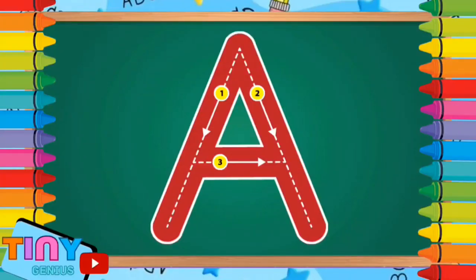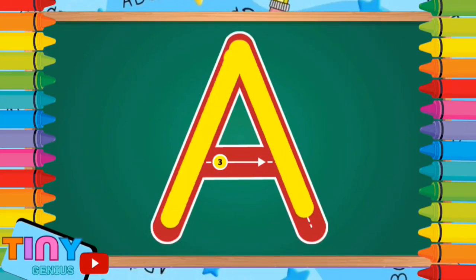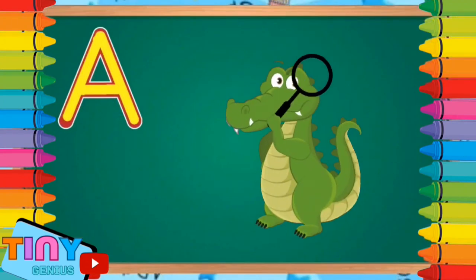Hi, kiddos. Let's learn how to write the letter A. Slant down, slant down, across. A is for alligator.